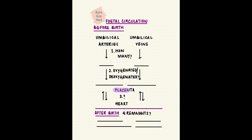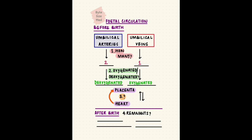During fetal life, the placenta does the job of oxygenating blood. Two umbilical arteries carry deoxygenated blood away from the heart and towards the placenta. After oxygenation, the oxygenated blood is carried by a single umbilical vein away from the placenta and towards the heart. After birth, with no more placenta, the remnant of the umbilical arteries is the medial umbilical ligament, and the umbilical vein becomes the ligamentum teres in the liver.